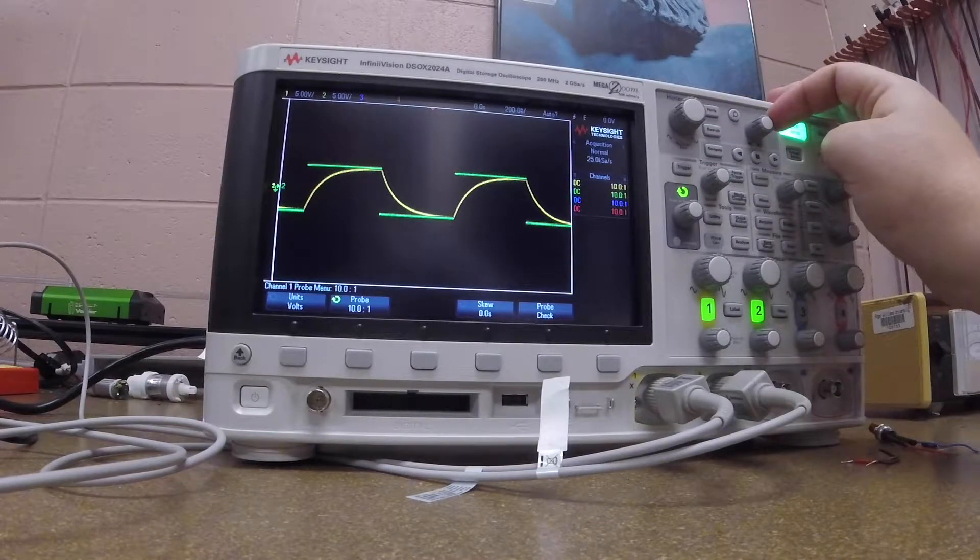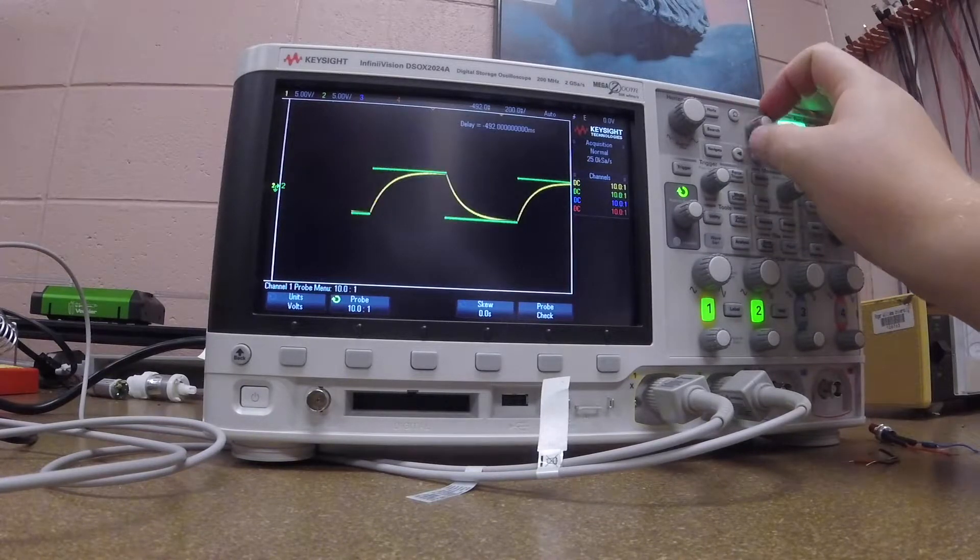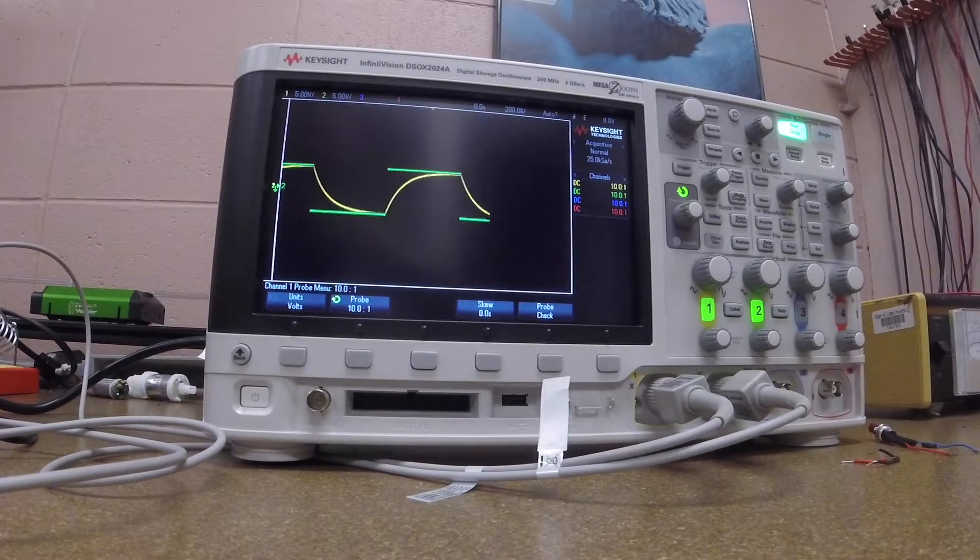I'm also able to change my zero reference on the horizontal or time scale. That is done by using this knob up here. I can move it either forward or backward, give it a delay. Again, I can push in to bring it back to zero, and you can see it says delay of zero.